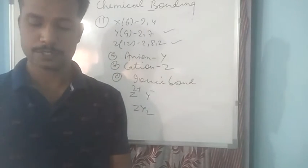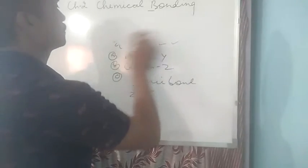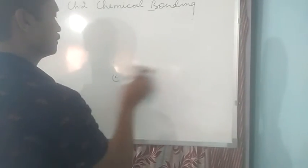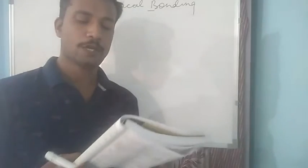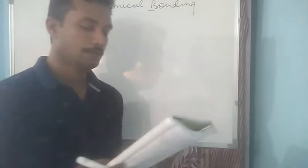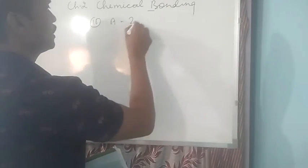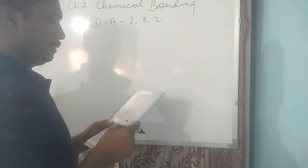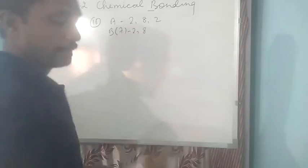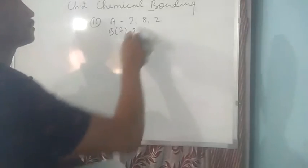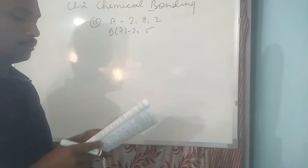We will have one more question. Last question. Question number 16. Element A has two electrons in its M shell. And element B has atomic number 7. So we can write A. Since it has two electrons in its M shell, so we can complete the electrons this way: K, L, M as 2,8,2. And B, atomic number is 7, so we can write 2,5.